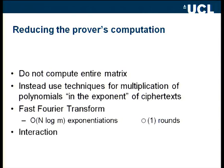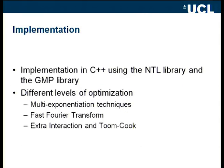Alternatively, with more interaction between verifier and prover, we need O(log m) more rounds but the number of exponentiations becomes linear. Note that for our range of parameters, multi-exponentiation techniques work better than FFT when m is small — it takes a while for the FFT asymptotic to kick in, similar to polynomial multiplication where polynomials must be large before FFT wins. We also examined extra interaction using Toom-Cook multiplication for the matrix diagonals.